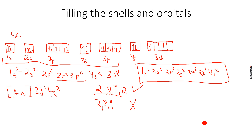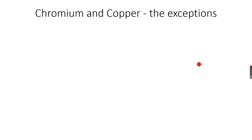This rule applies specifically to 4s and 3d, not to any other subshells. We always empty 4s first, which is why we write 4s at the end even though it fills first. Just remember: 4s fills first and empties first, 3d fills later and empties later. Now, chromium and copper are the only two exceptions to the electronic configuration rules.